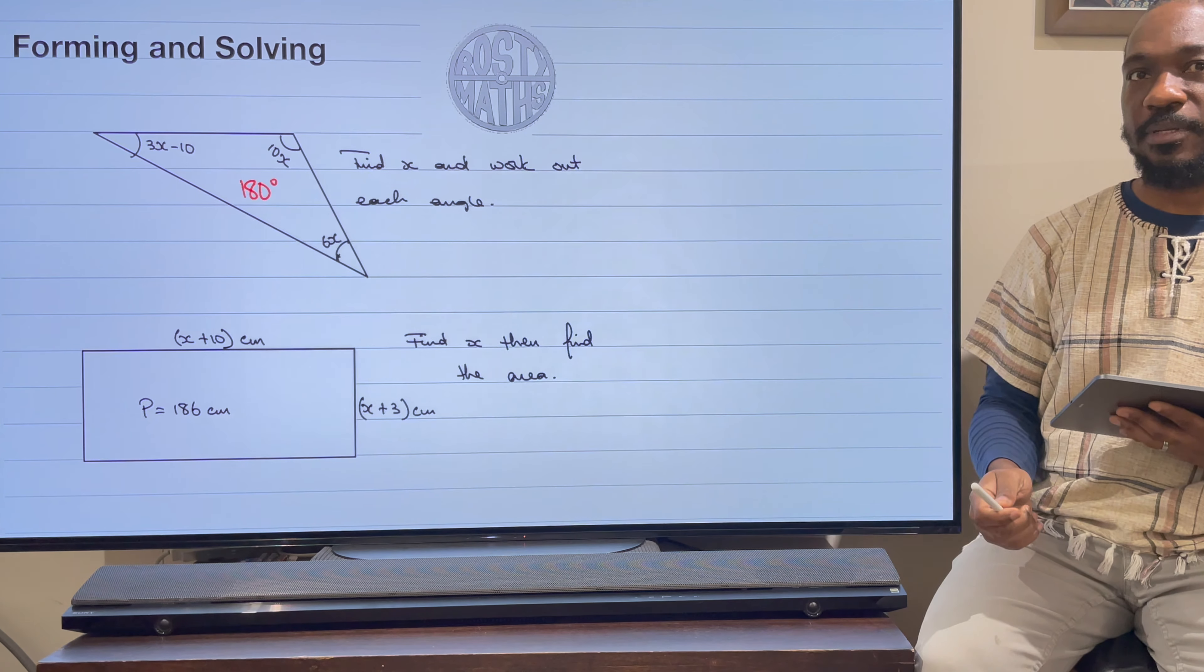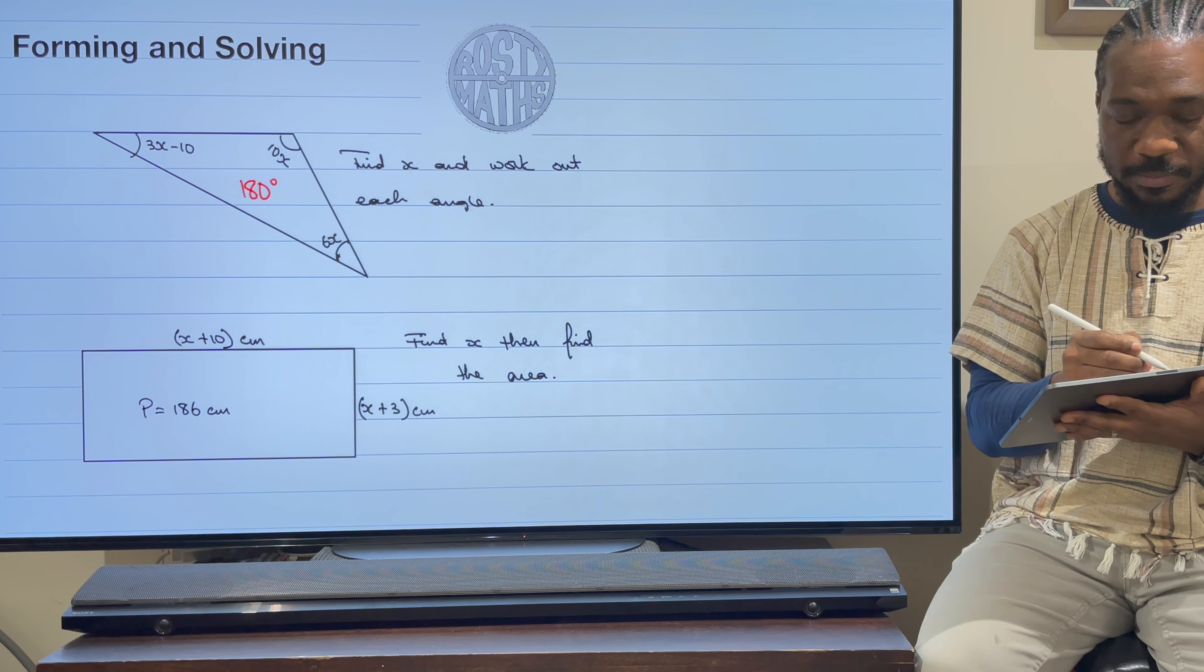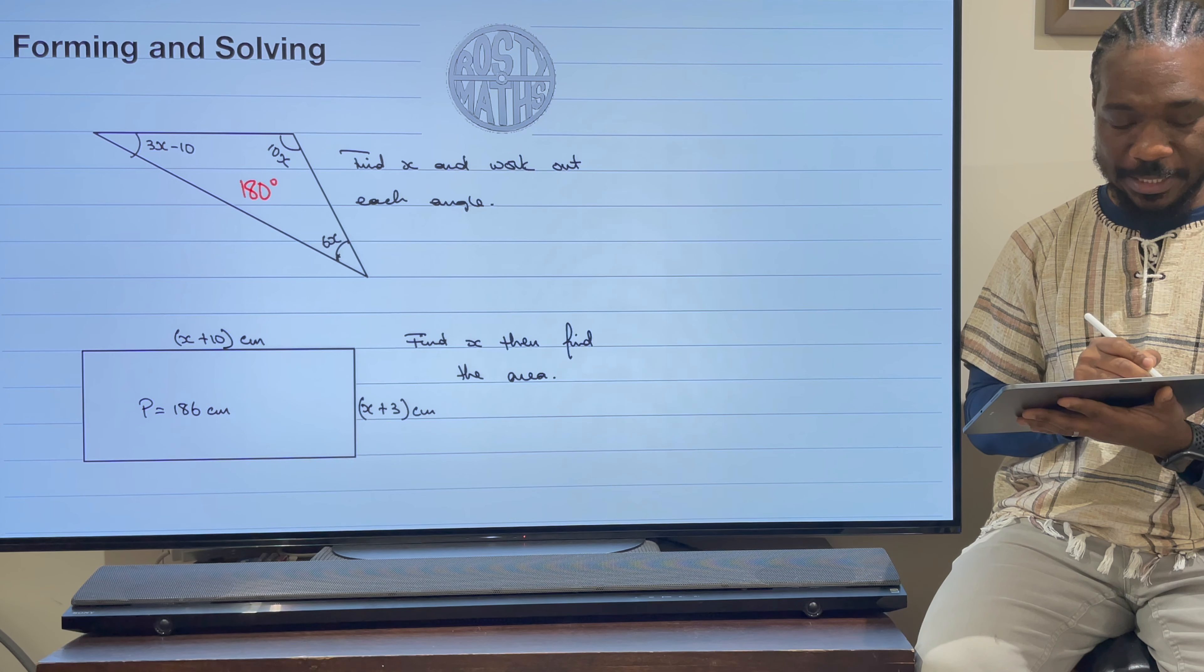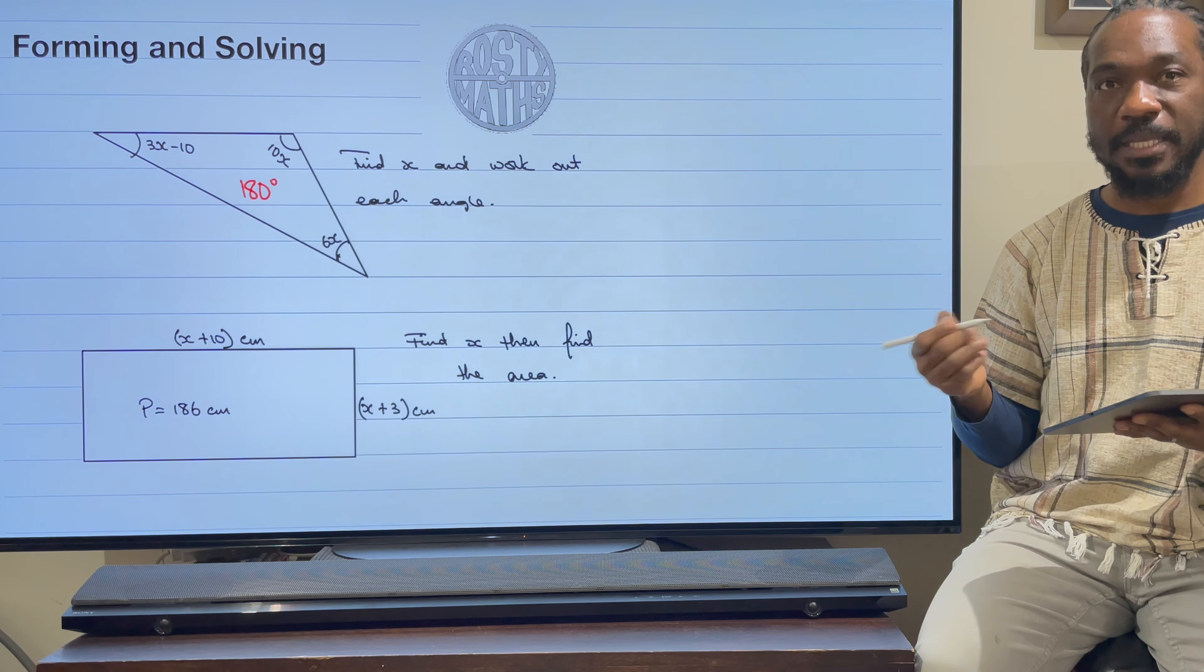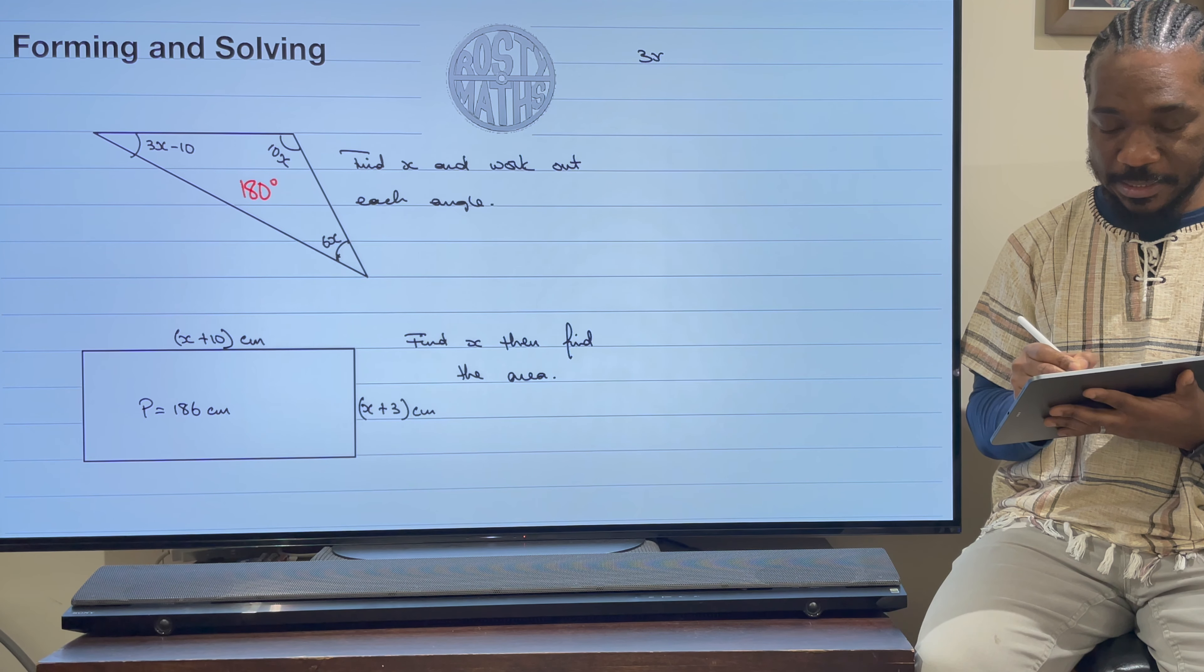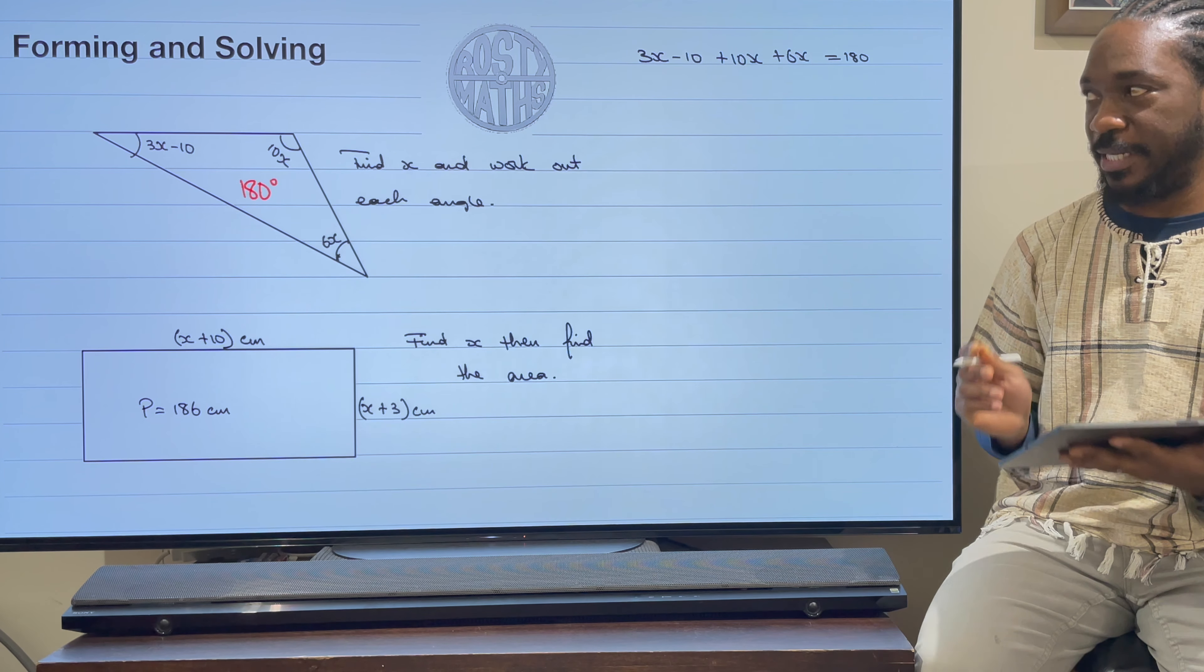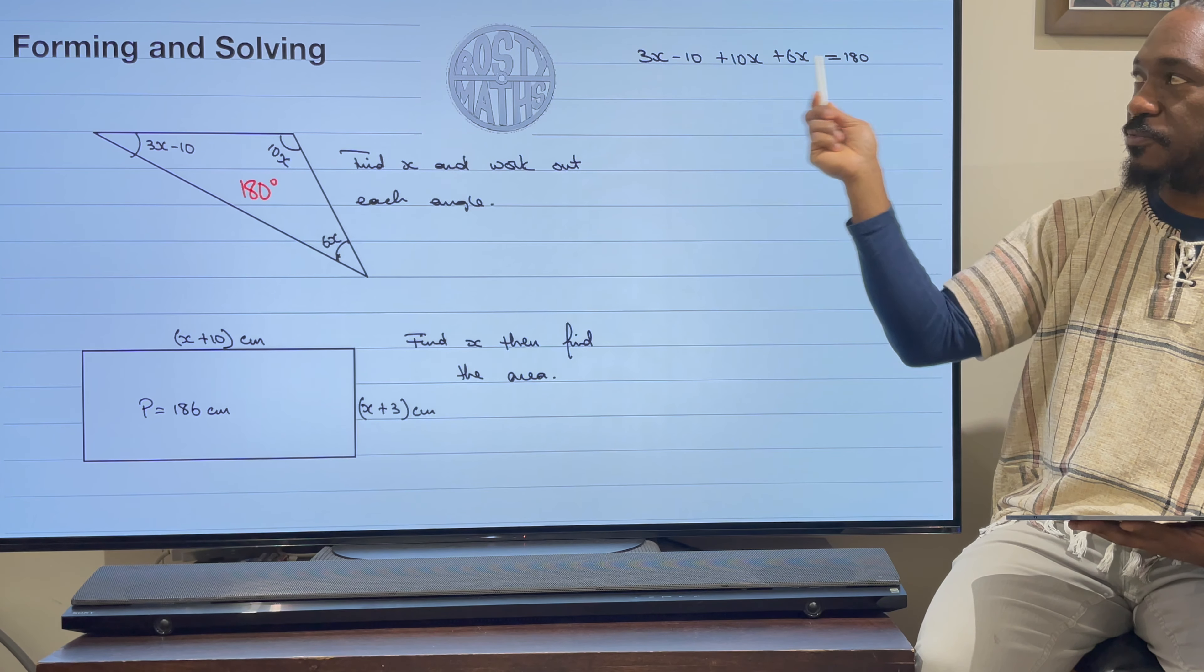So I need to find x and then work out each angle. Let's go find x. This is where the forming part comes. I need to form an equation in order to find x. I know that all the angles add up to 180, so that angle add this angle add that angle equals 180. So I'm going to write it down just like that: 3x take away 10 add 10x add 6x is equal to 180 degrees. I'm just following the rules I know, and just like that I've formed an equation.